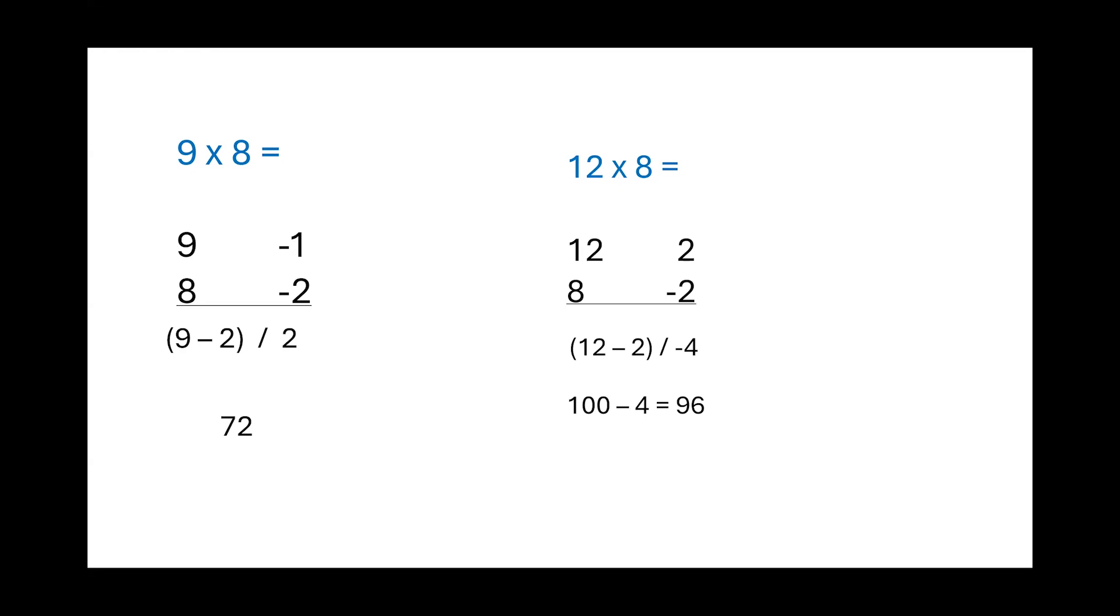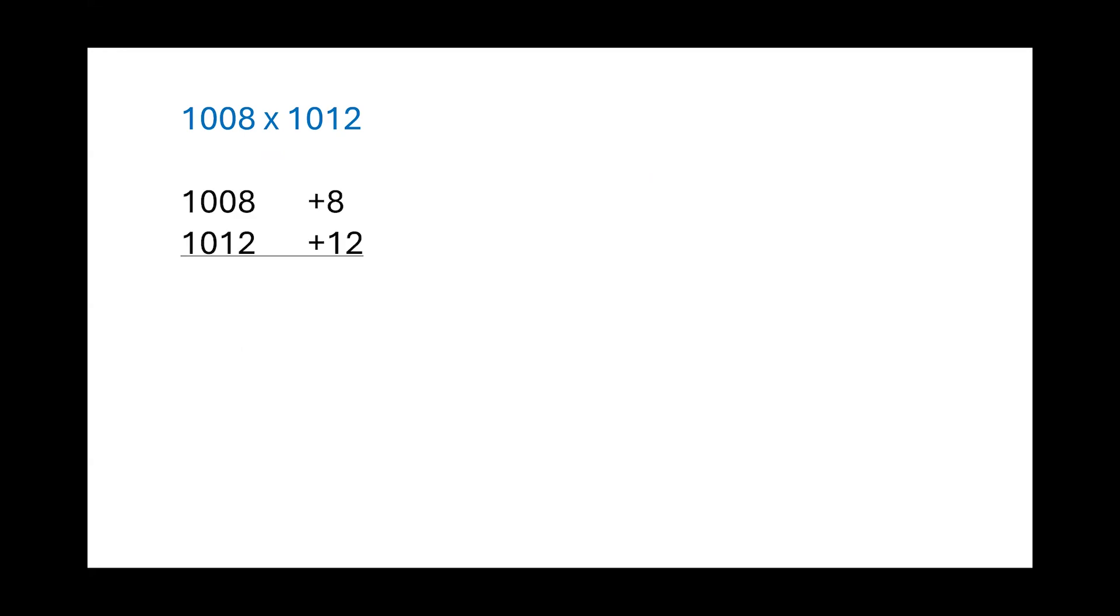I hope you have become comfortable with the base method. But what if the numbers are pretty huge like 1008 into 1012? Now it's pretty clear, right? The base is 1000. So you can simply get the answer as you start with the 12 into 8 and you get 96. How do you write 96? 0, 9, 6. Why? Because the base is 1000. And 1008 plus 12 gives you 1020. So your final answer would be 1020 followed by 096. And absolutely there was no need to write any step even if the numbers are so huge. Let's try 998 into 994. Base is 1000 minus 2 units away and minus 6 units away. So 6 into 2 you don't write 12. You write 012 because the base is 1000. And 998 minus 6 gives you 992 followed by 012. Easy, right?